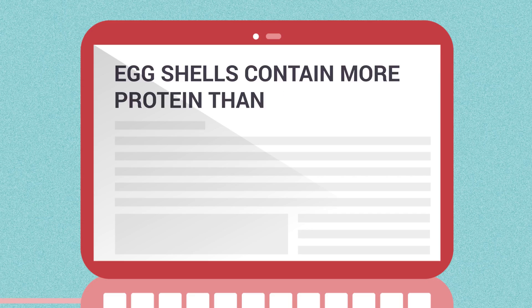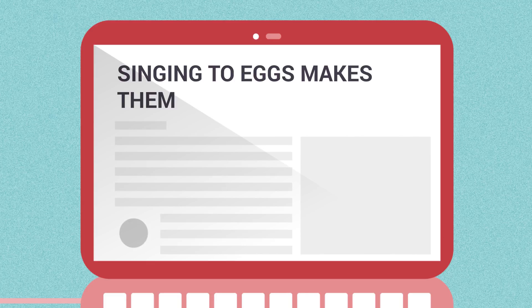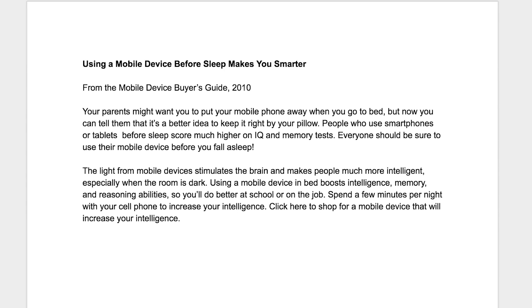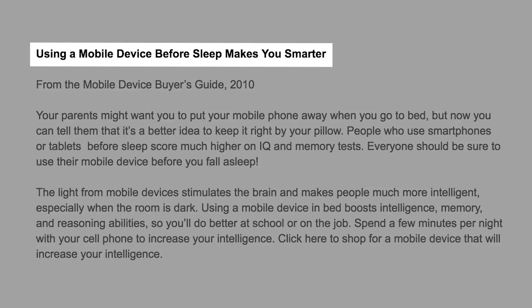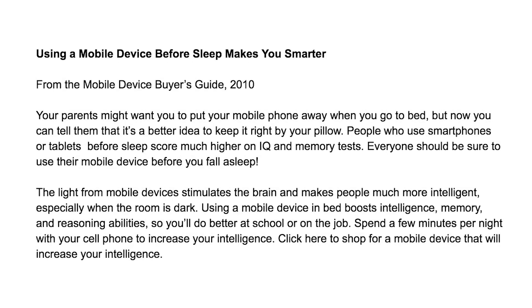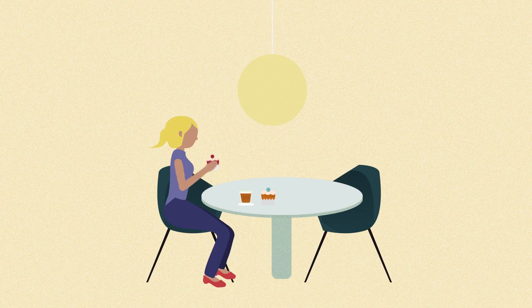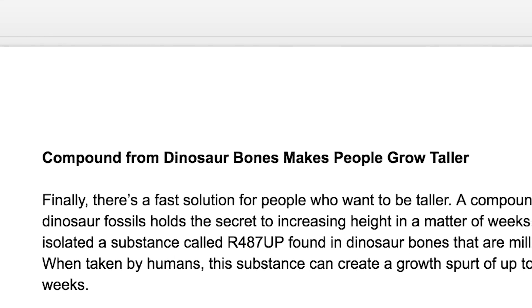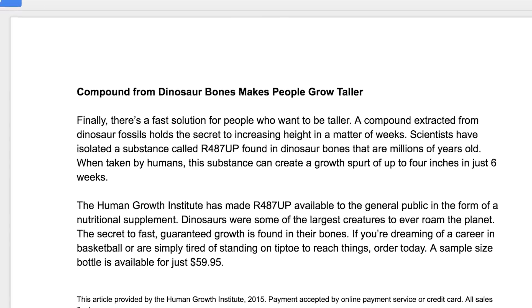First, come up with a claim that isn't true, but isn't so far-fetched that readers would immediately know it was fake. You could think of a result people would strive for, like getting better grades or making a lot of money. Then think of a fantastic and easy way that could be achieved, such as using a cell phone or eating a certain food. Or take a fact you learned in one of your classes and claim the opposite.